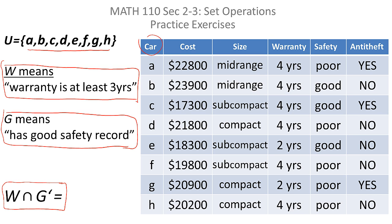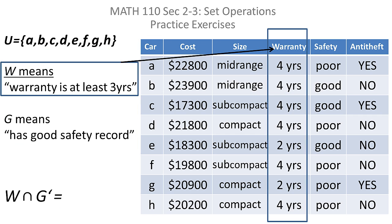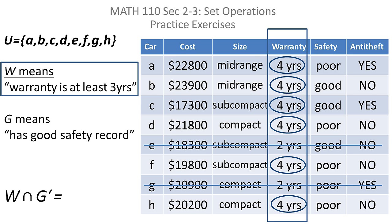That sounds easy enough — we just need to find W, find G complement, and take their intersection. W has to do with the warranty, so we look at the warranty column. W says the warranty is at least three years, so we circle all warranties that are at least three years and mark out any car that doesn't satisfy that criteria. That means we eliminate car E and car G.